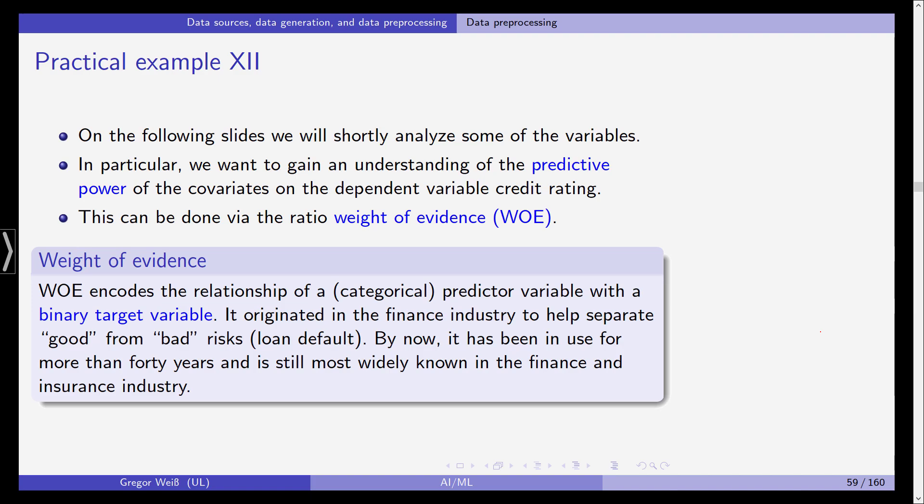After having looked at the summary statistics we now want to continue using what is called the weight of evidence ratio, the WOE. The weight of evidence ratio is a first way of having a look at the explanatory power of some features because in the end in data science we want to predict something.